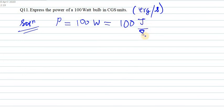So one joule is equal to 10 raised to power 7 erg.